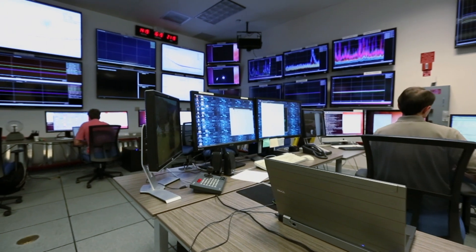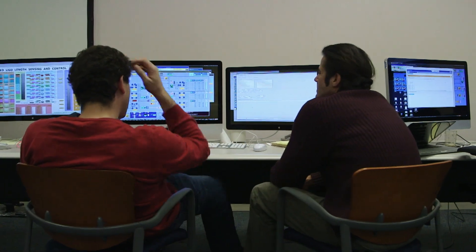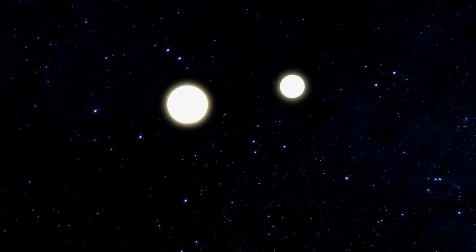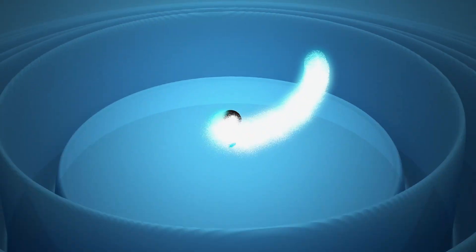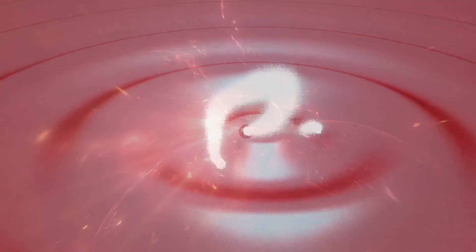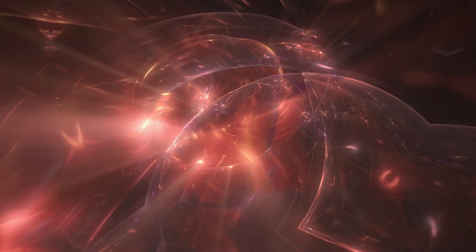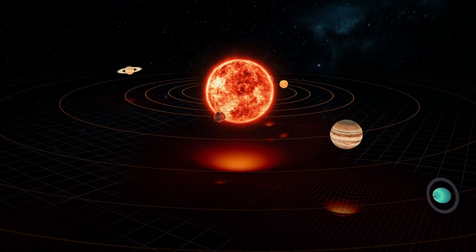In its first five years, LIGO has registered several major events. In 2015, we had the first discovery of gravitational waves. In 2017, we discovered the first binary neutron star discovery. In 2020, we discovered the first-ever neutron star black hole merger.